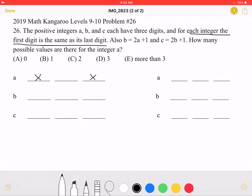The problem also tells us that B is equal to 2A plus 1. Therefore, if the last digit of integer A is X, the last digit of integer B must be 2X plus 1, which again must also match its first digit.